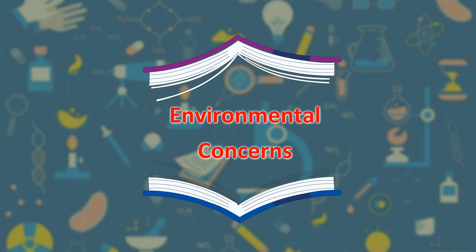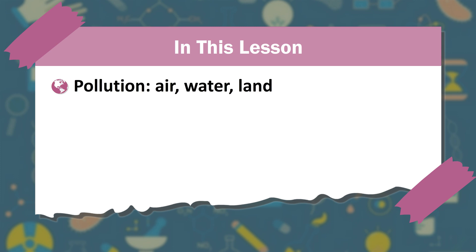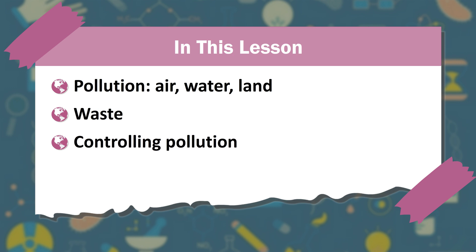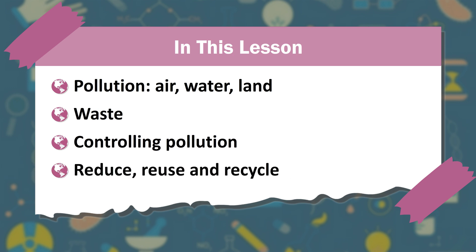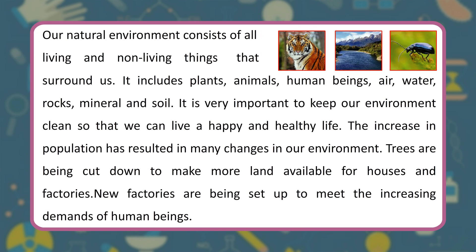In this lesson, we will learn about environmental concerns: pollution, air, water, land, waste, controlling pollution, and reduce, reuse, and recycle. Our natural environment consists of all living and non-living things that surround us. It includes plants, animals, human beings, air, water, rocks, minerals, and soil. It is very important to keep our environment clean so that we can live a happy and healthy life.